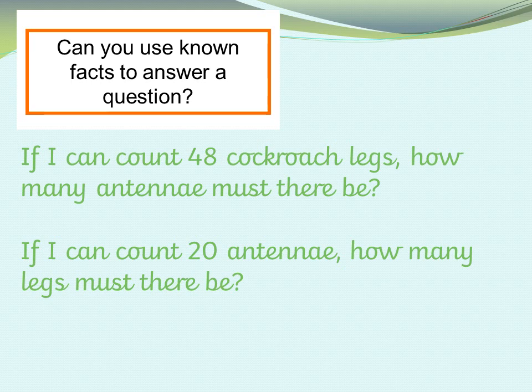If I can count 48 cockroach legs, how many antennae must there be? Remember, we need to divide that by six first of all to find out how many cockroaches there must be, and then multiply that answer by two to find out how many antennae. Make a note of your answer. So: 48 divided by six — I know that six eights are 48, so 48 divided by six is eight. Then eight multiplied by two, because there are two antennae on each cockroach, gives us 16 antennae.